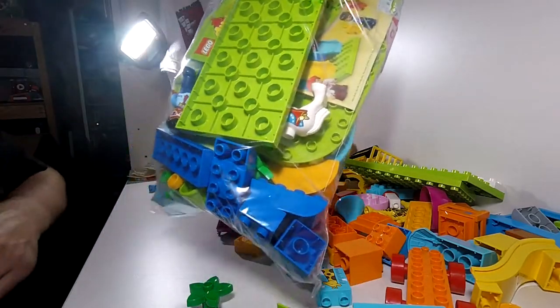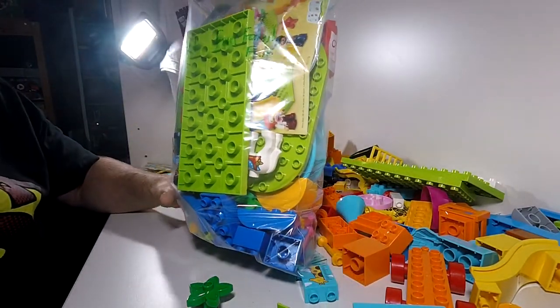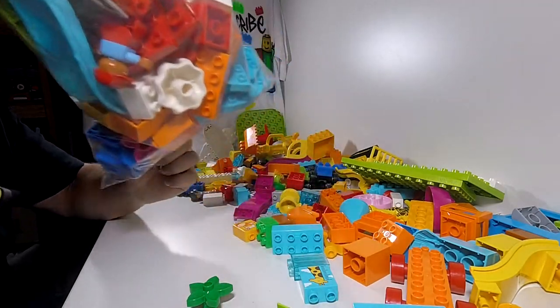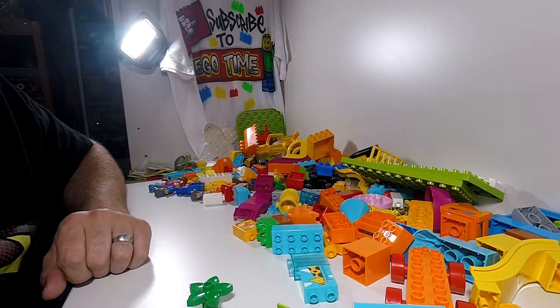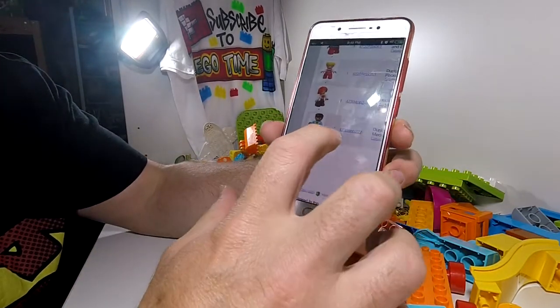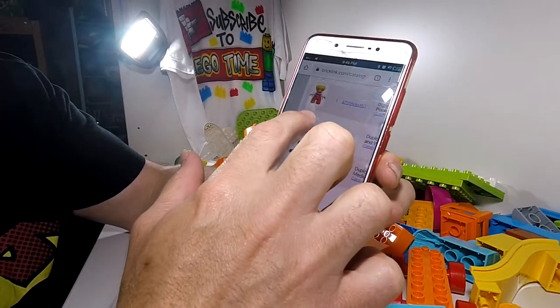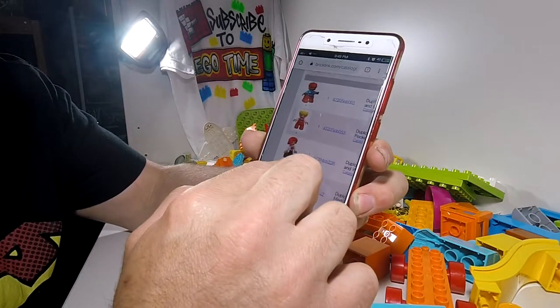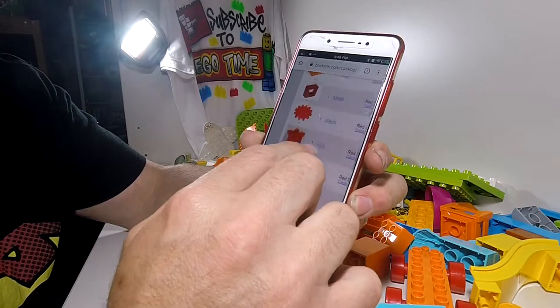So here we go. This is the bag of Duplo we have. Everything in the box except for this little girl. That is the only piece we are missing out of the entire set.